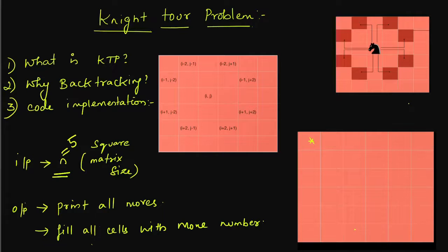We will discuss the rules. When you have a knight coin, you move it. You will move the knight coin. Let's try a simple example.